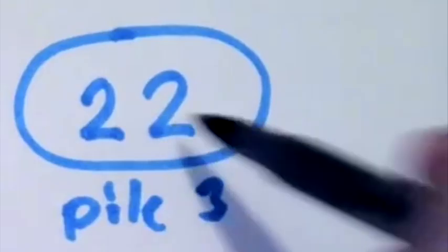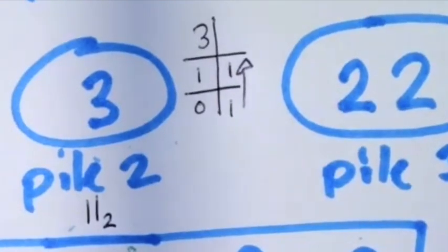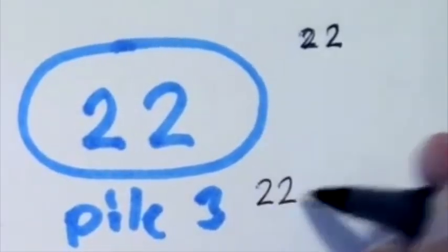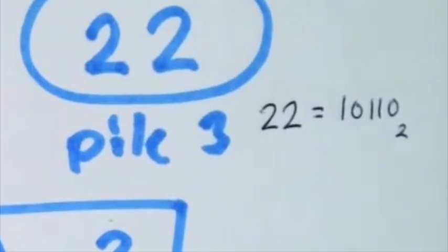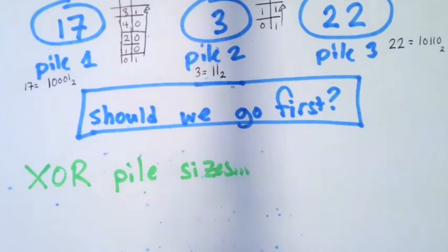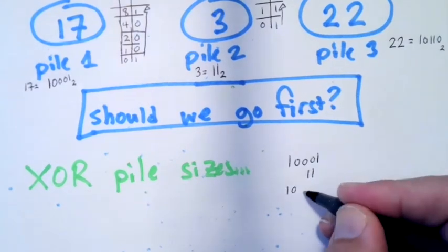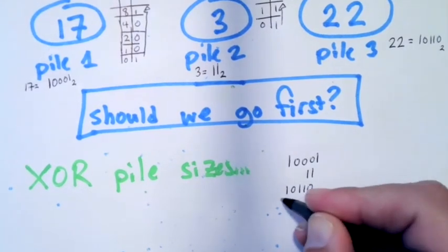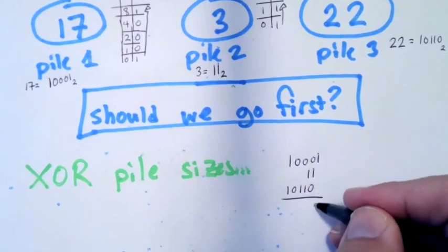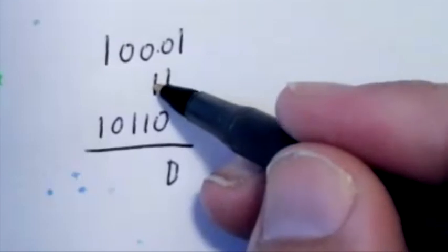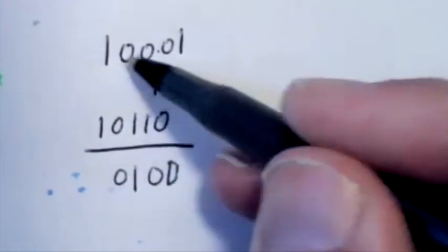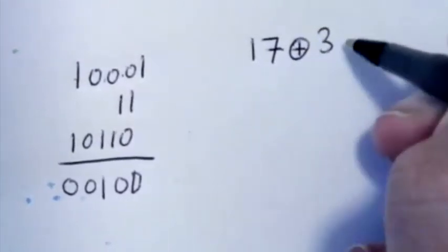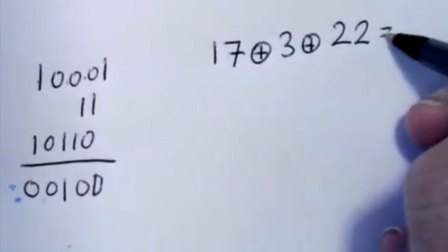And then for 22, when we did 22, you're telling me we got 22 equals 10110 base 2. So now we're going to XOR these together. When you XOR them in 3s, you just can XOR the first two and then XOR the third. It works just like regular addition. So 1 XOR 1 XOR 0 is 0, 0 XOR 1 XOR 1 is 0, 0 XOR 1 is 1, 0 XOR 0 is 0, 0 XOR 0 is 0. So 17 XOR 3 XOR 22 equals 4.